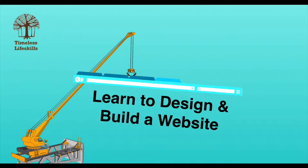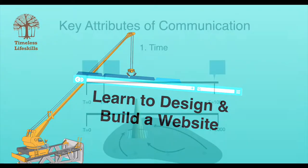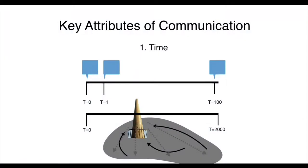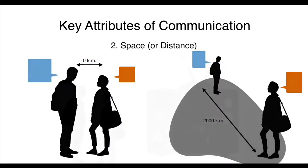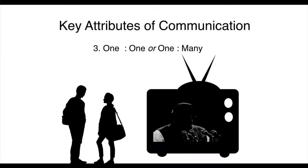Let's do a recap of what we have learned so far. We started by looking at certain key attributes of communication. The first thing we looked at was time versus space or distance. The next attribute we touched upon was whether communication is one-to-one or one-to-many, which is also called broadcast communication.